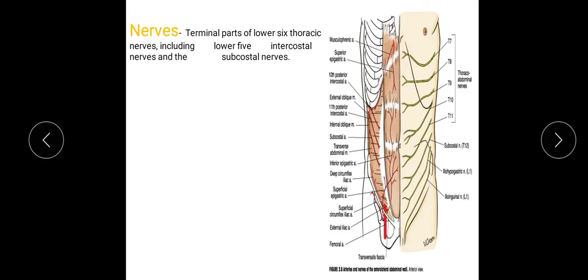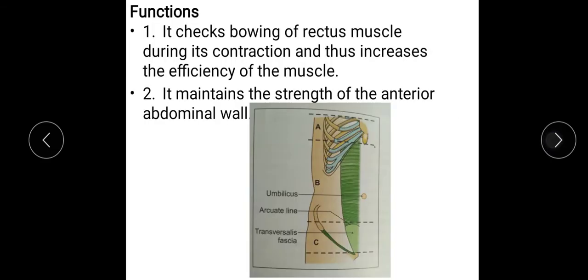These are the contents of the Rectus Sheath. The function: it checks the bowing of the Rectus Muscle during contraction and thus increases the efficiency of the muscle. It maintains the strength of the anterior abdominal wall.